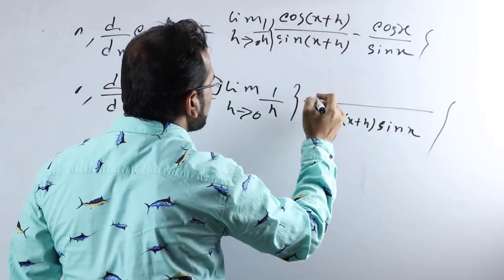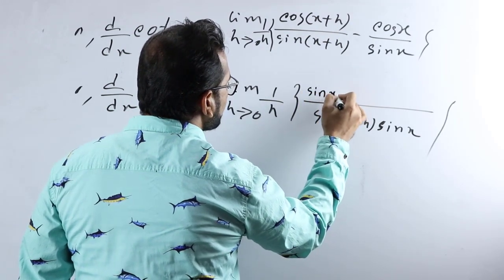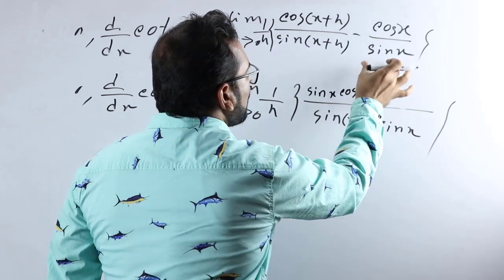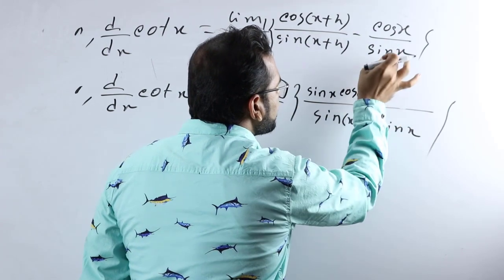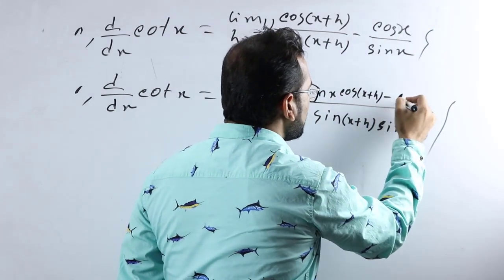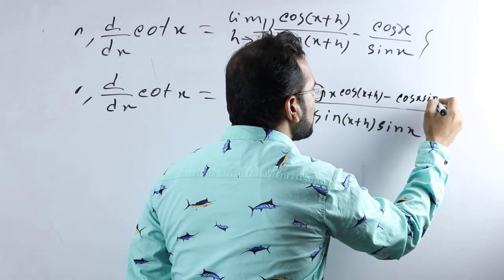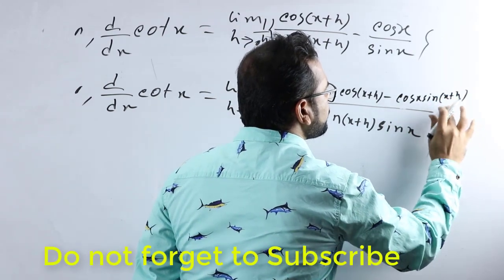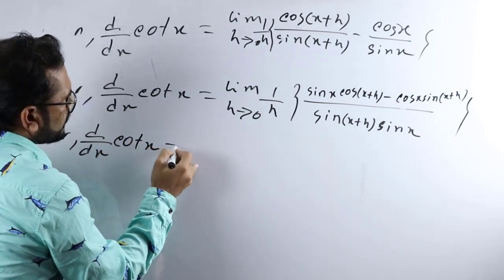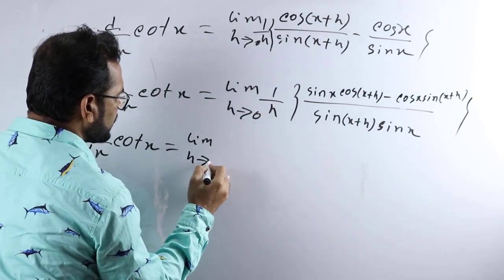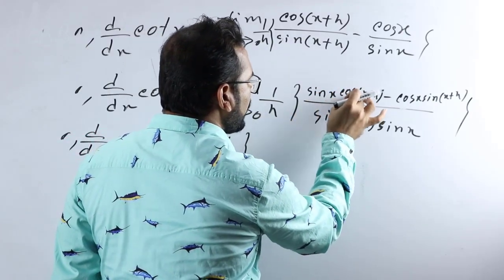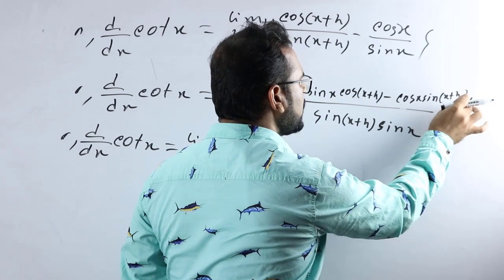By the LCM, multiplying through: the numerator becomes sin x times cos(x+h) minus cos x times sin(x+h), and the denominator is sin(x+h) times sin x. The numerator matches the form sin A cos B minus cos A sin B.